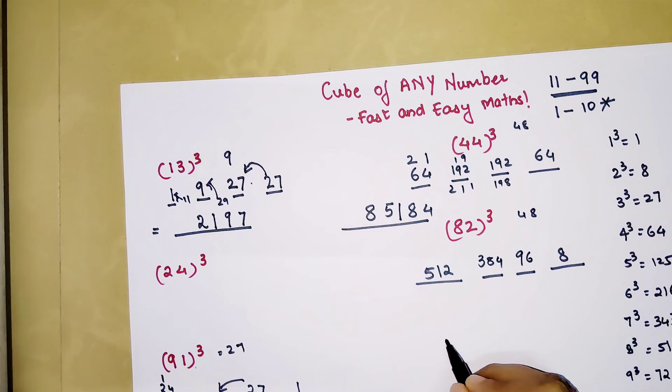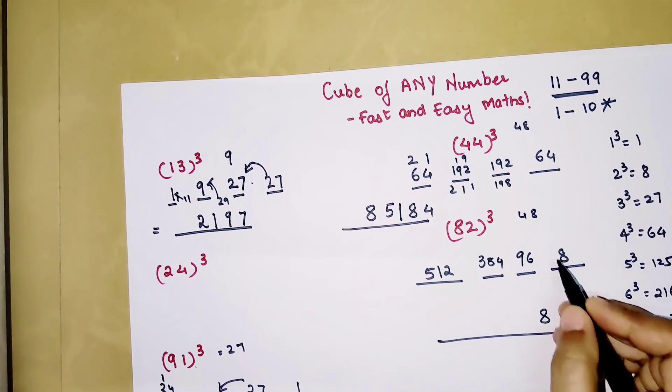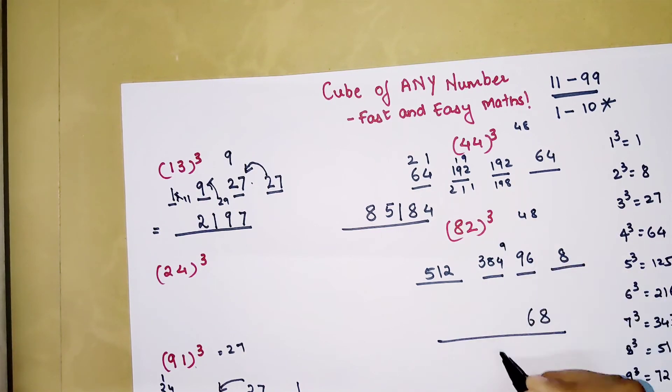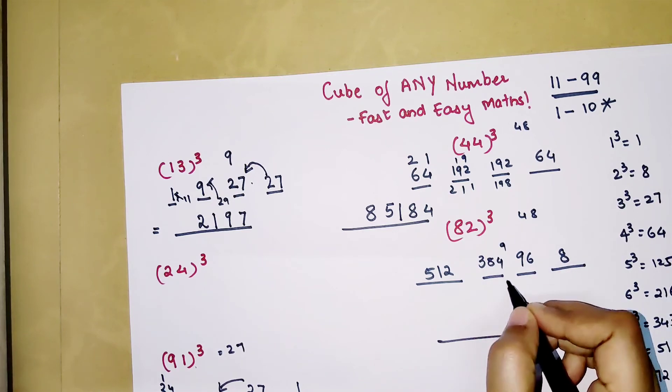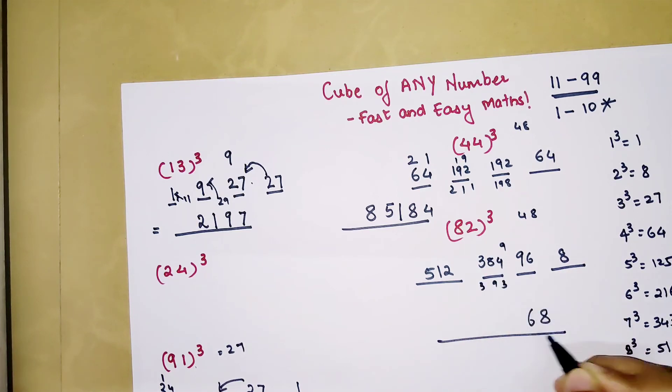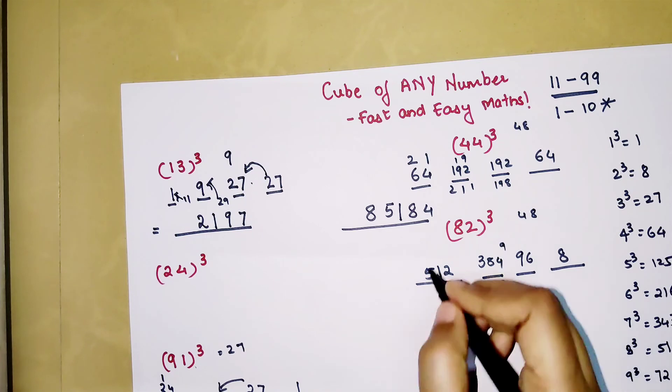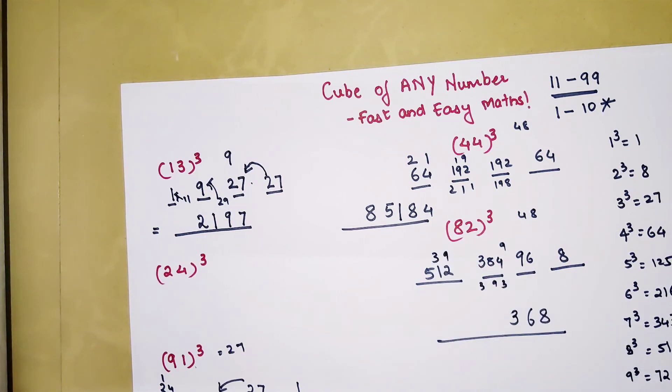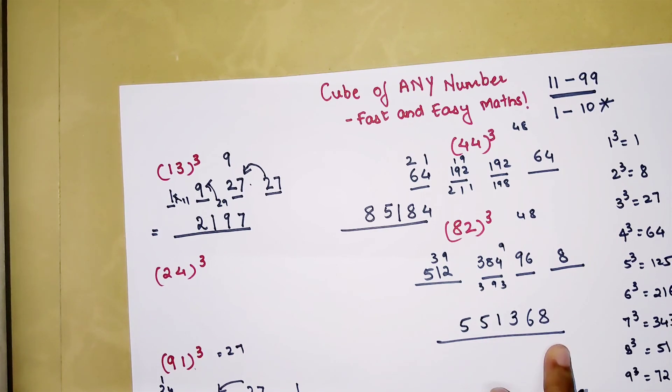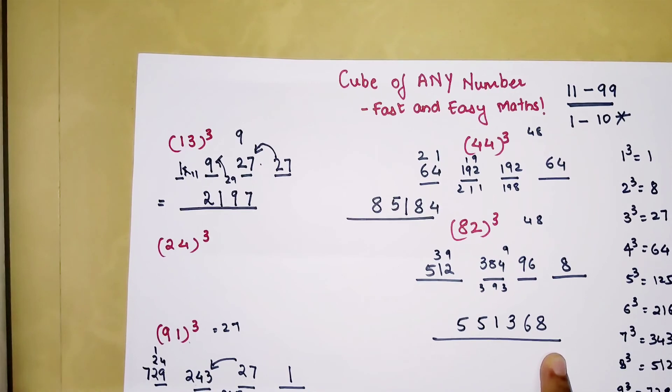So your final answer will have 8. This 6 will be taken as it is. Here the 9 gets added so you get 393. So 3 will be taken down. And 3 and 9 taken here. So you have 11, 1 carry, 4, 5 and 5. So your final answer is going to be 551,368. You understood how easy this became.